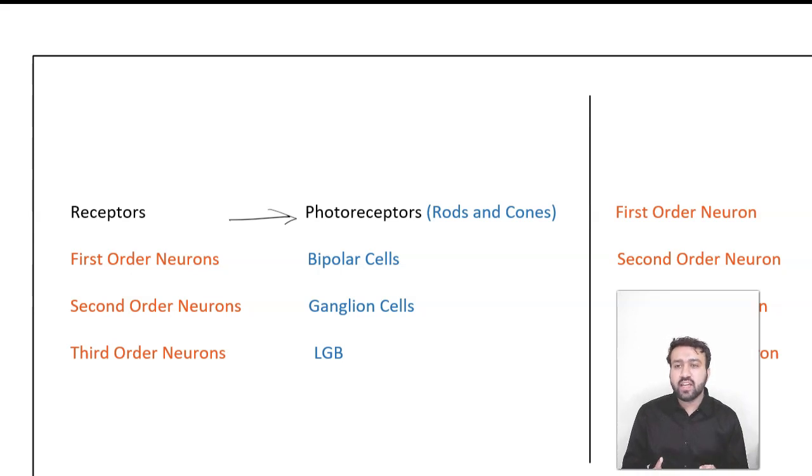So basically what the standard textbooks are saying is that rods and cones are the receptors, first order neurons are the bipolar cells, second order neurons are ganglion cells, third order neurons are lateral geniculate body. Now, if you change the order, if you start calling photoreceptors as the first order neuron because they have some neural element, the books are calling them first order neurons. So that kind of is wrong information. The whole order changes.